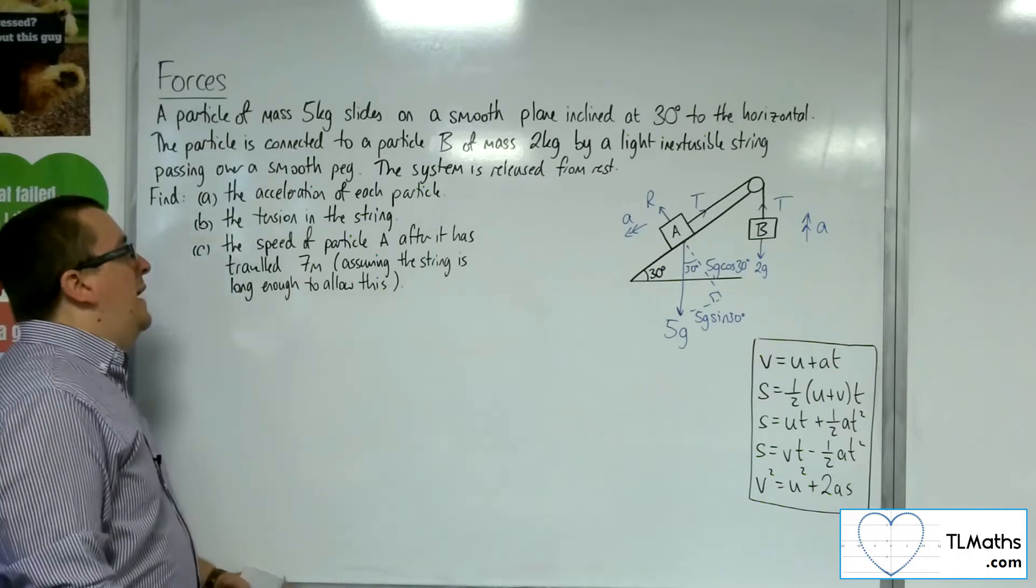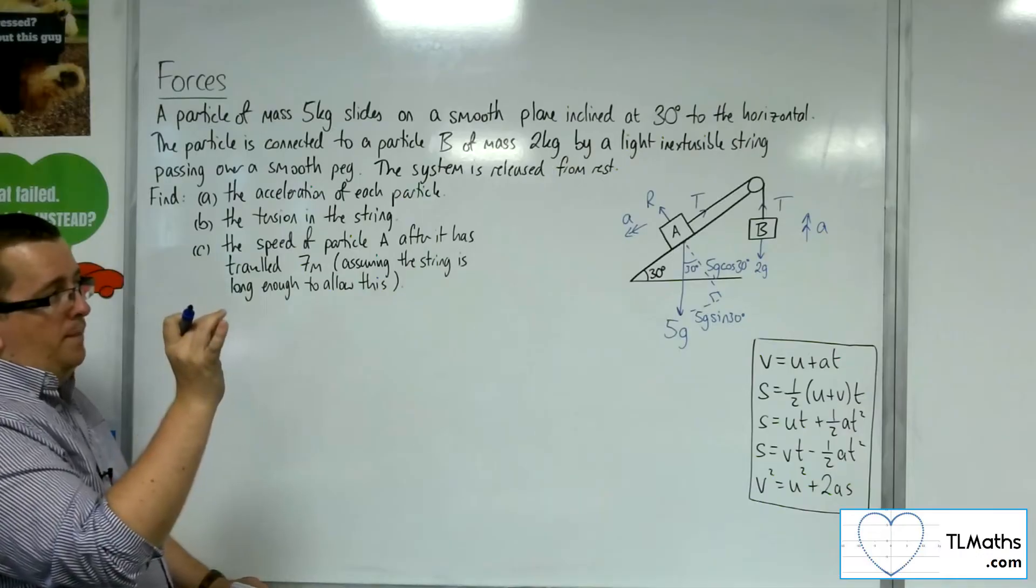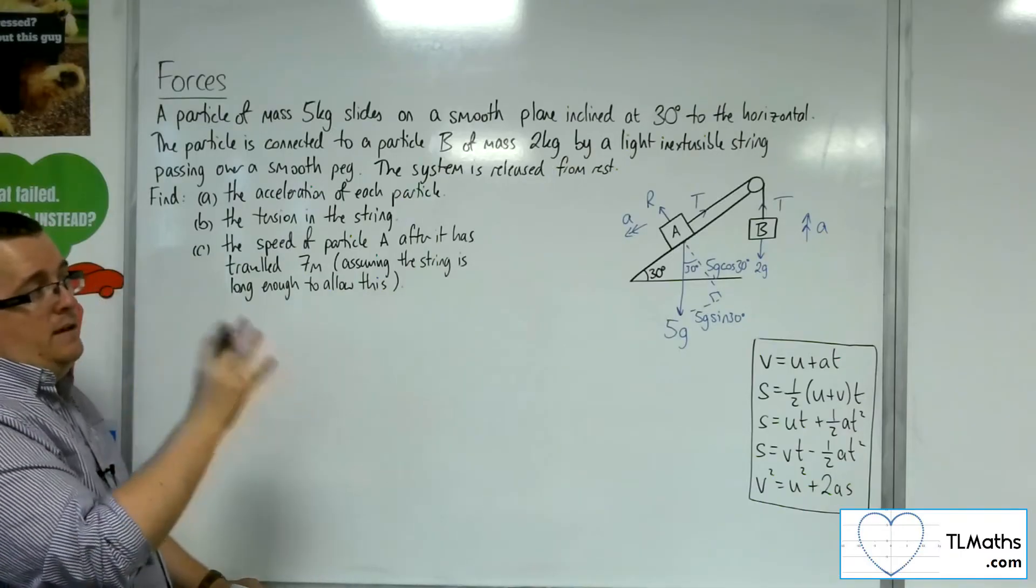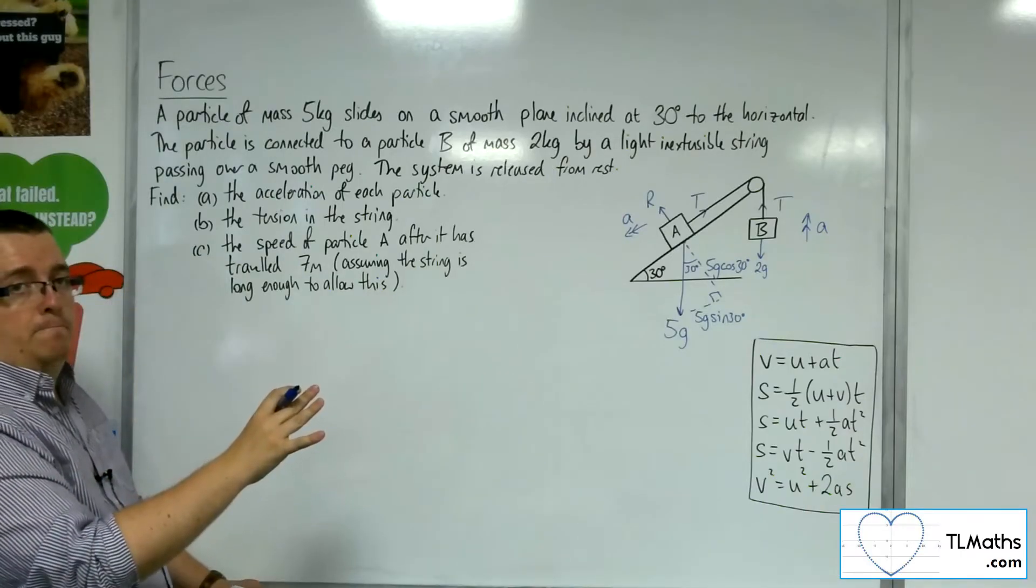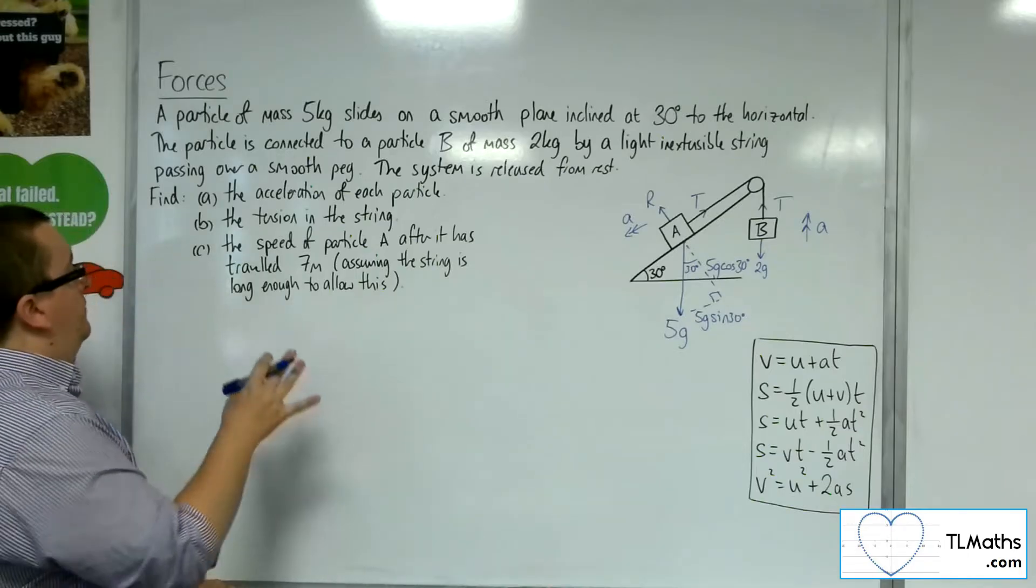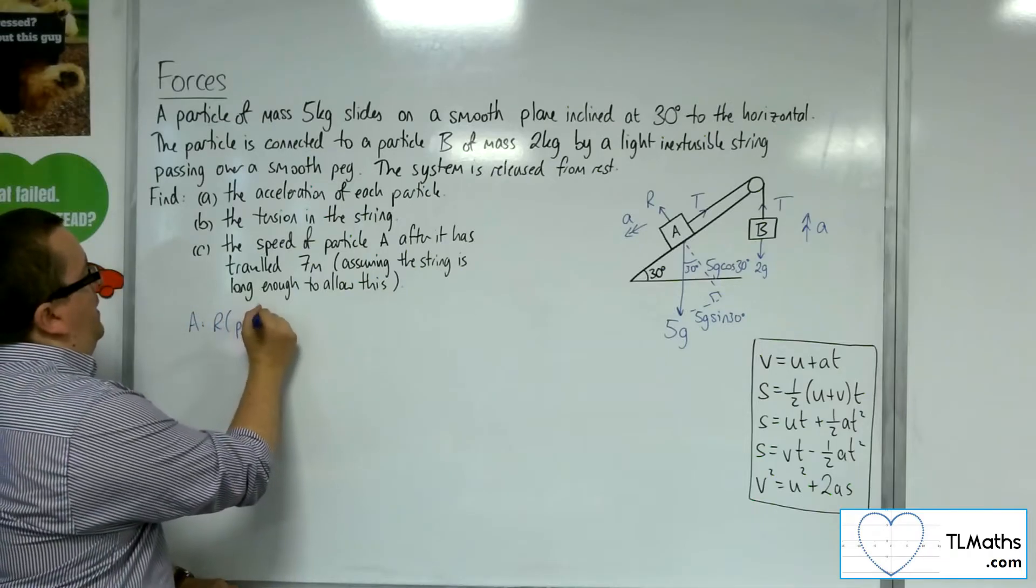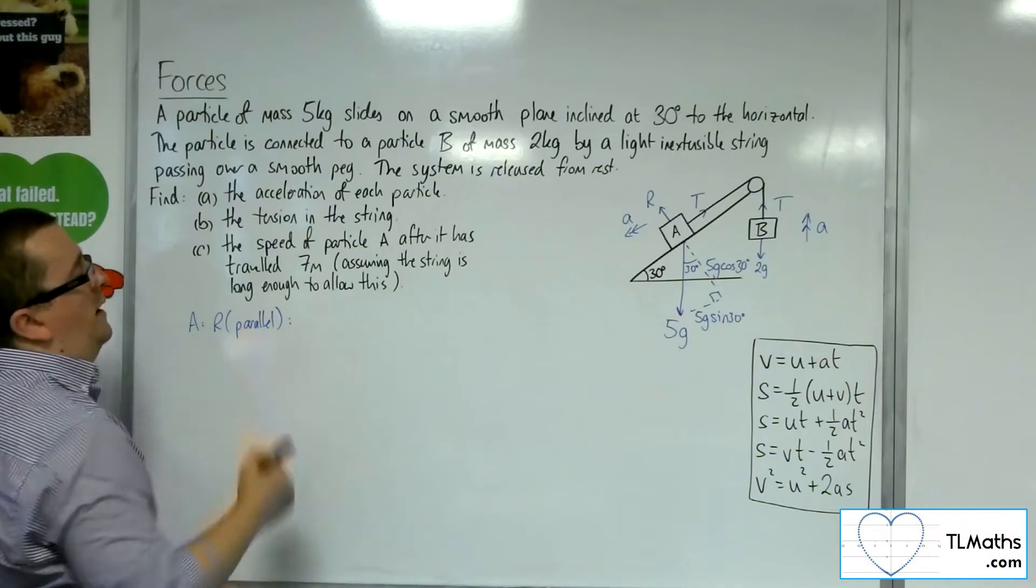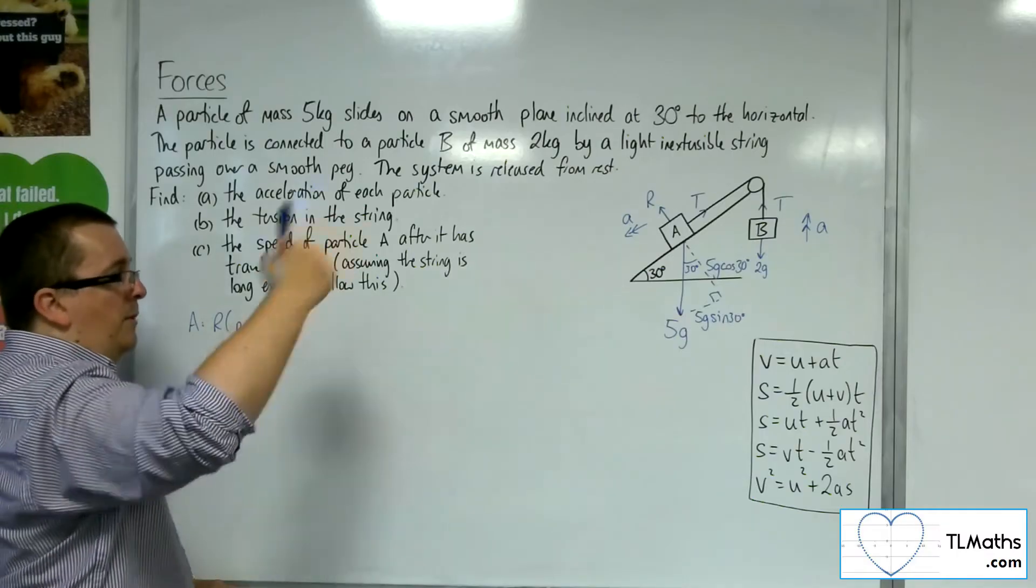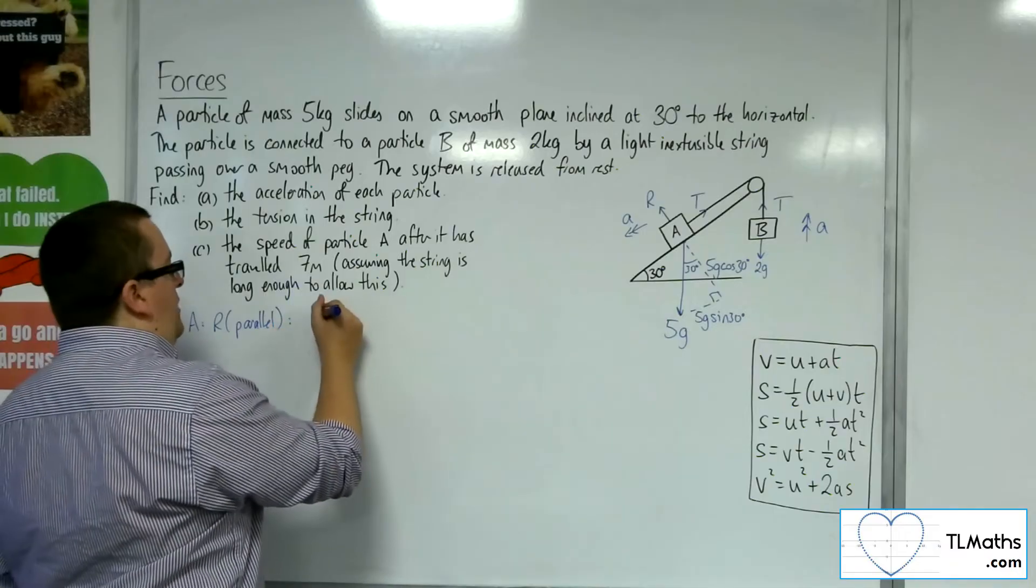So what we're going to do is we're going to look at resolving A parallel to the plane, and B, we're going to resolve vertically. Looking at resolving in the direction of motion. So if I look at particle A, and I resolve parallel to the plane, taking down the plane as positive, the positive direction, I've got the weight 5G sine of 30.